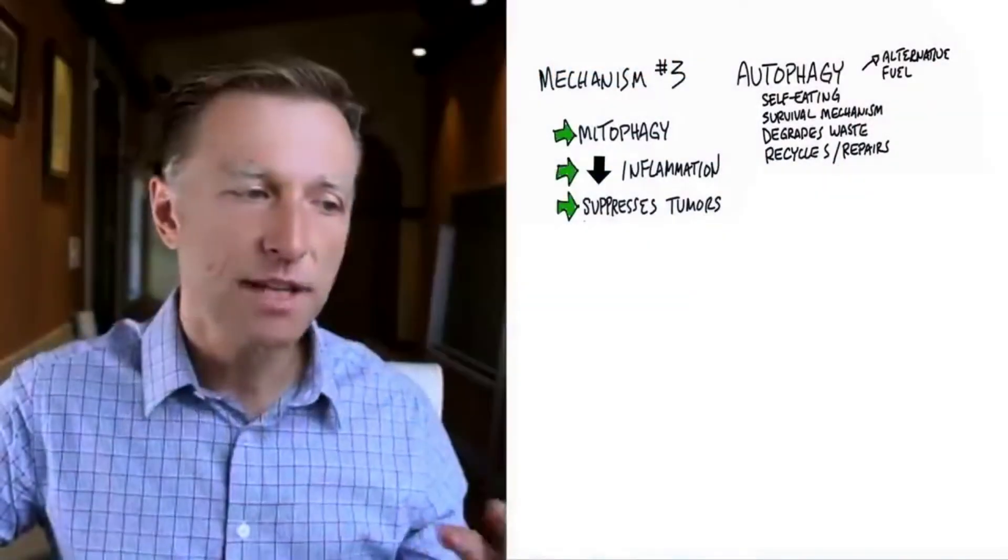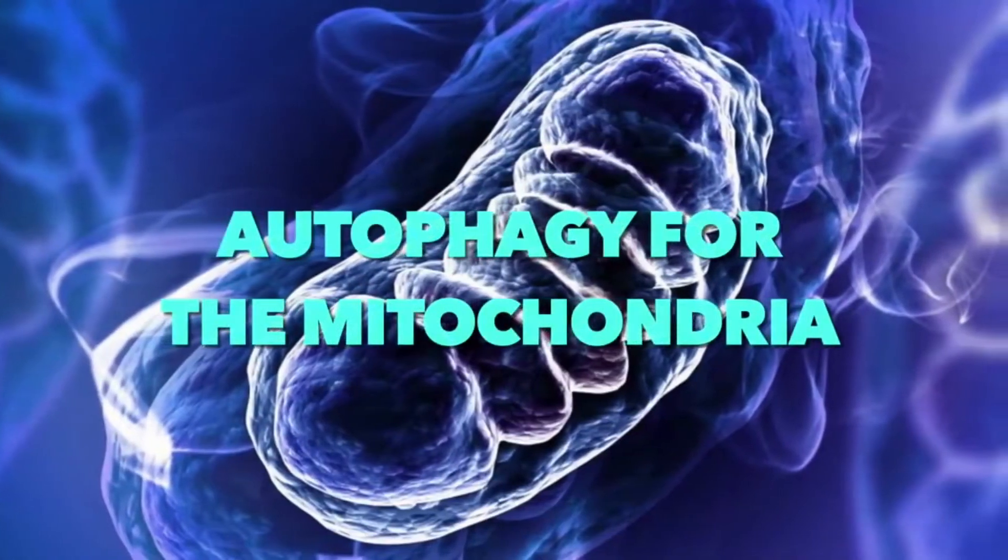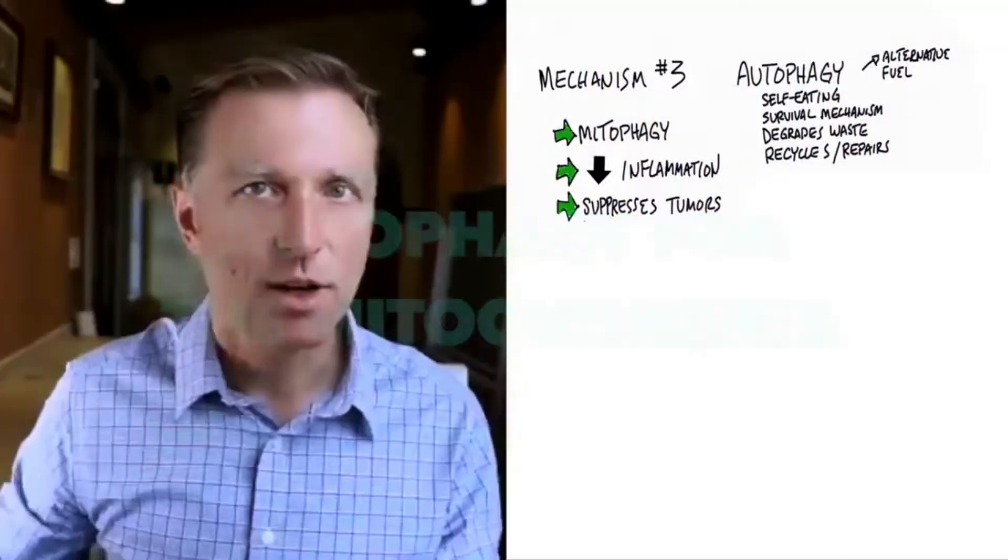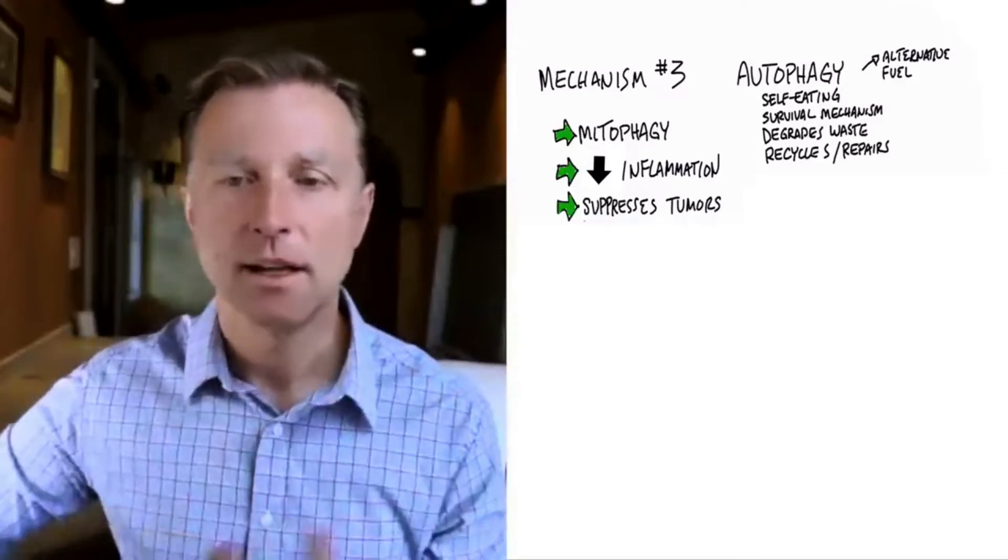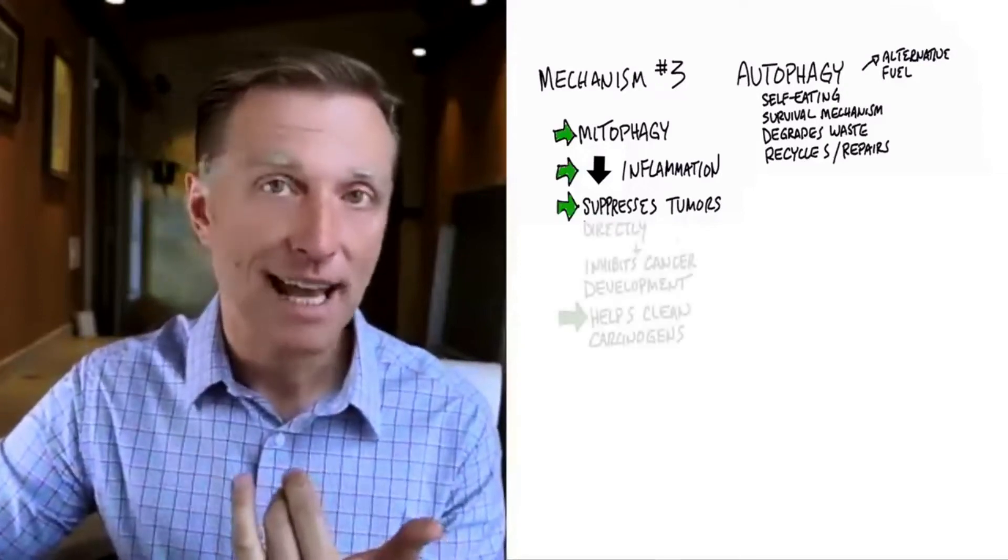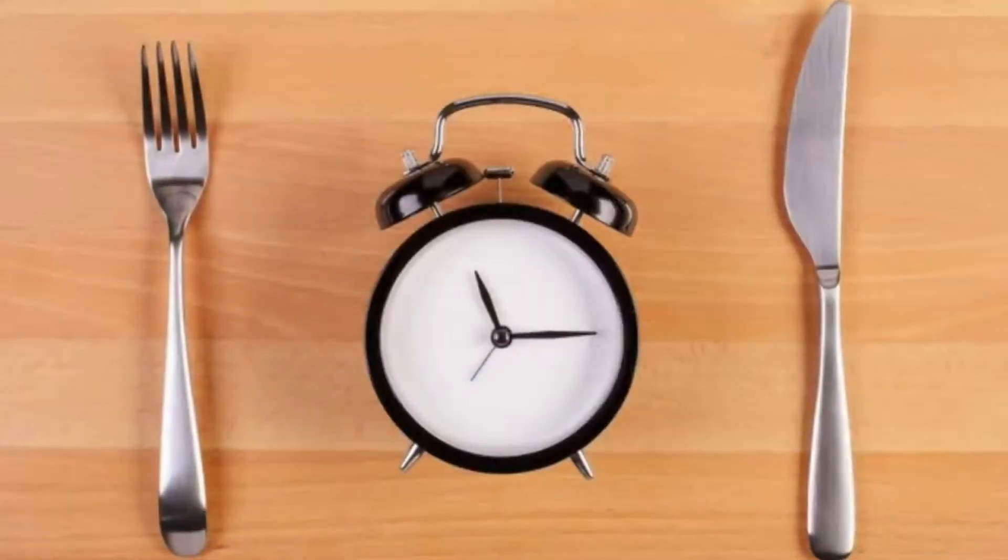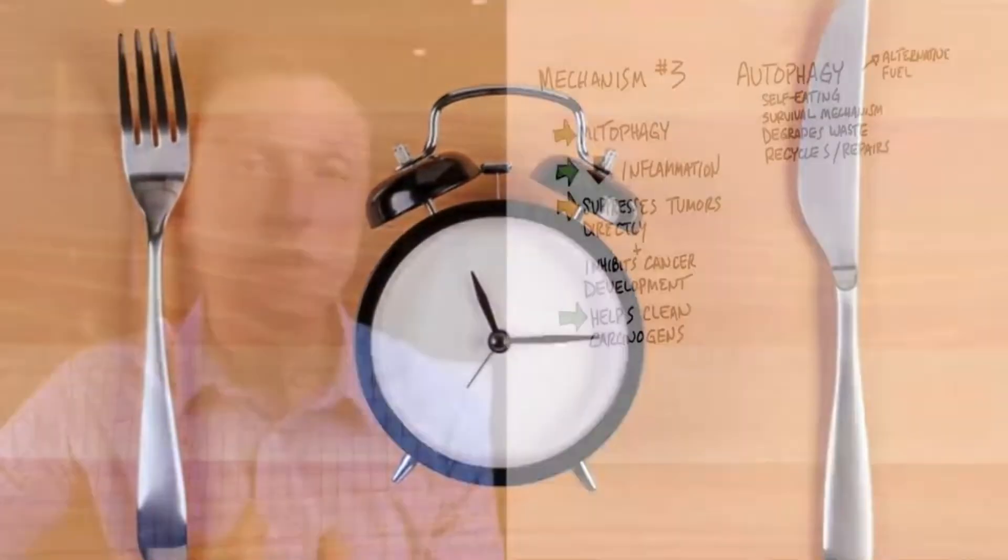Now, there's different types of autophagy. One type is called mitophagy. Now, what is mitophagy? That is autophagy for the mitochondria. So your body goes in there and it starts to clean up the mitochondria that are damaged. Remember I talked about the cause of cancer is damaged mitochondria? Well, when you fast, you increase mitophagy.